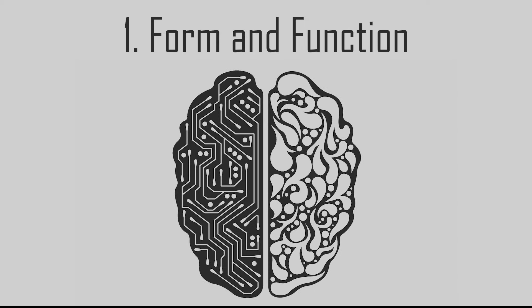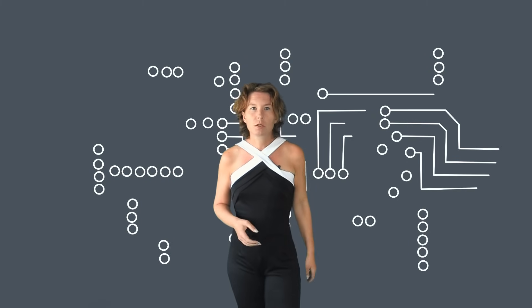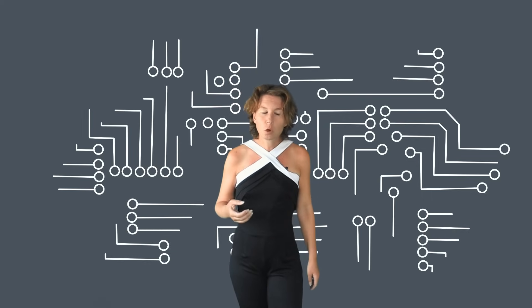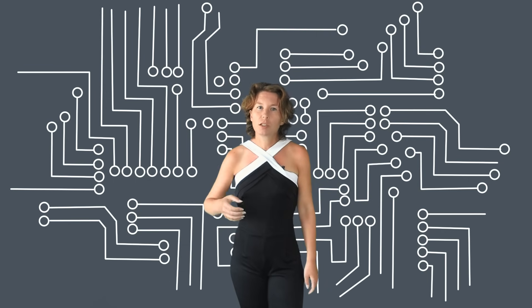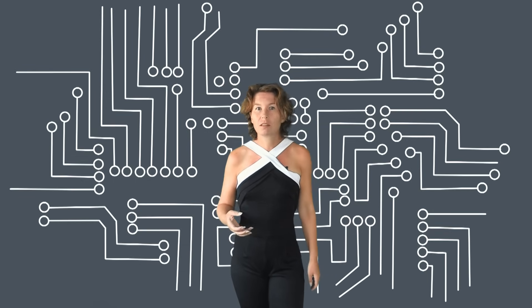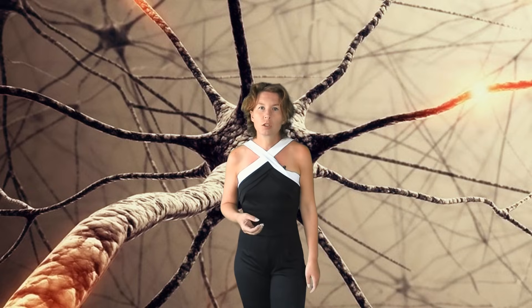Here are the key differences between artificial and real intelligence. First, form and function. A neural net is software running on a computer. The neurons of an artificial intelligence are not physical — they are encoded in bits and strings on hard disks or silicon chips, and the physical structure looks nothing like that of an actual neuron. In the human brain, in contrast, form and function go together.